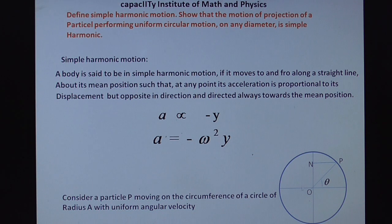Let OP is A with uniform angular velocity. So what is angular velocity? That is represented by omega. So consider a particle P moving on the circumference of a circle of the radius A with uniform angular velocity omega.